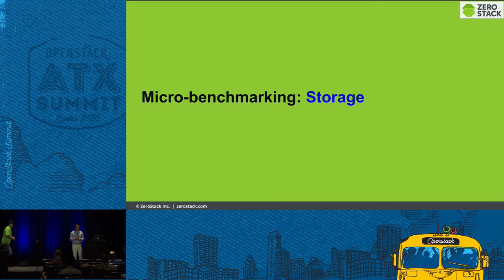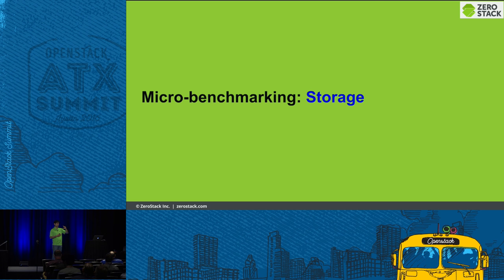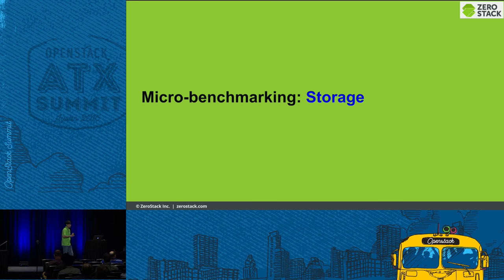Now Nodir will go through some of the experimental results. The reason to start from micro benchmarking is that these are individual puzzle pieces which come into play when running a macro workload. When running Jenkins or Hadoop jobs, we can analyze what part is getting bottlenecked and how we can do better. Let me start from storage.